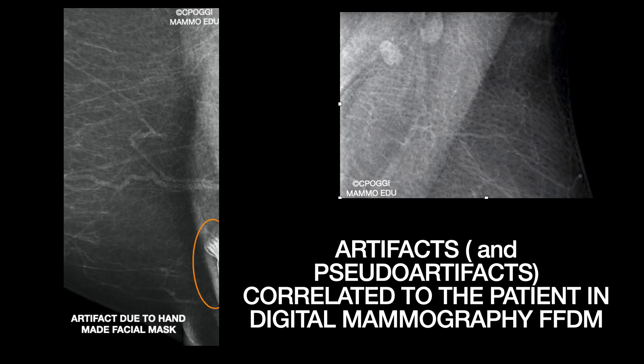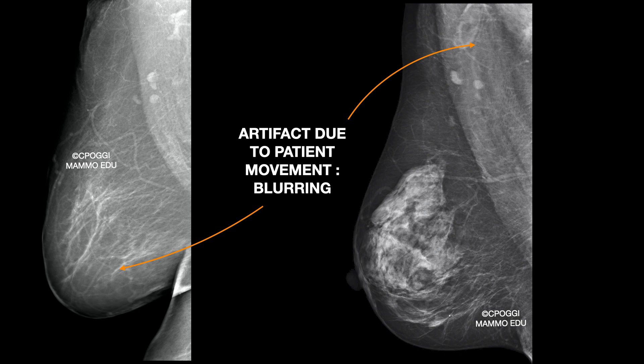Let's talk about the artifacts and pseudo-artifacts correlated to the patient. These are examples of blurring due to patient motion during acquisition. In the first example, the artifact could be due to sub-optimal compression of the breast's rear portion, so it should be ascribed to poor positioning. In the second example, motion blur of axillary tissues.